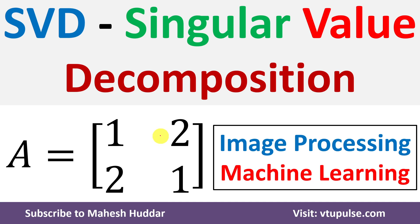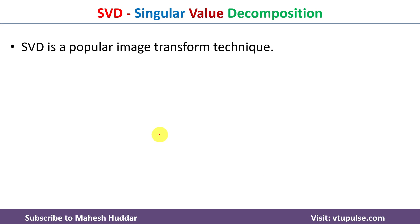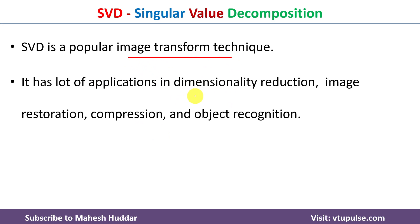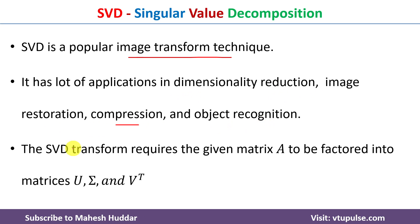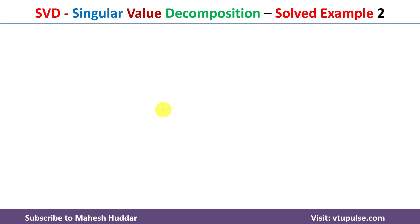Welcome back. In this video I will discuss what is Singular Value Decomposition (SVD) and how to factor a given matrix using a simple solved example. SVD is a popular image transform technique with applications in dimensionality reduction, image restoration, image compression, and object recognition. SVD transforms a given matrix A into matrices U, Sigma, and V-transpose, where U is the left singular matrix, Sigma is the singular matrix, and V-transpose is the right singular matrix.